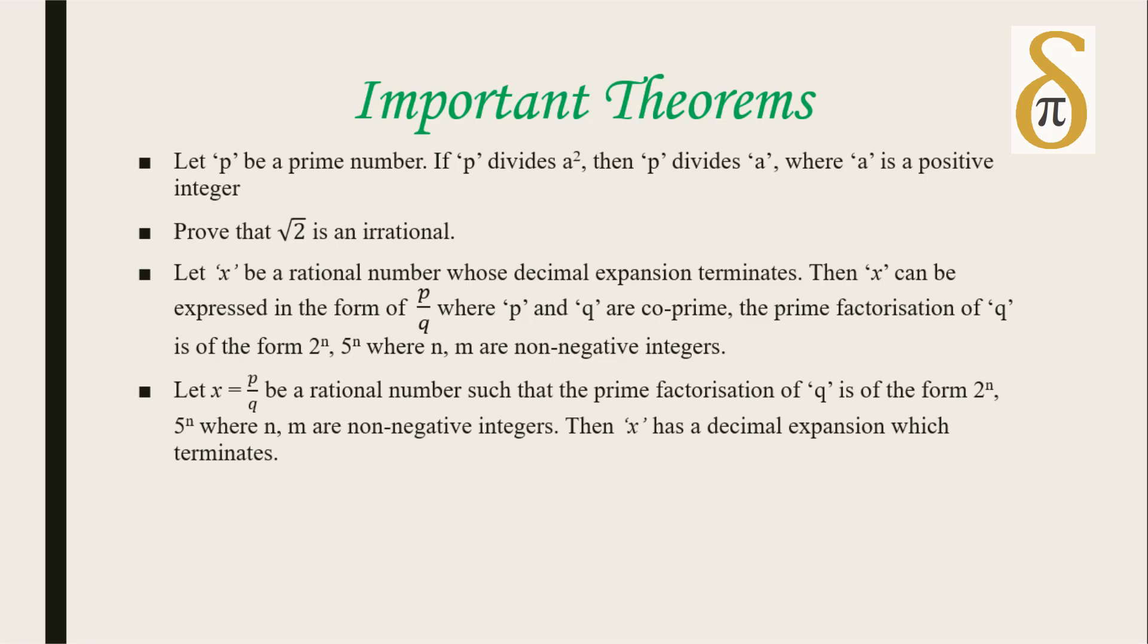Converse of the above statement: If x equals p by q, a rational number such that the prime factorization of q is of the form 2 to the power n times 5 to the power m where n and m are non-negative integers, then x has a decimal expansion which terminates. These are the important topics you have to remember in real numbers.